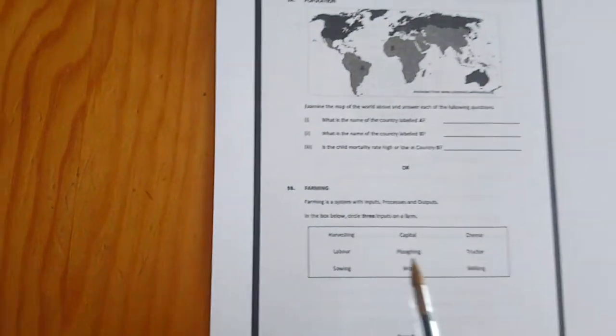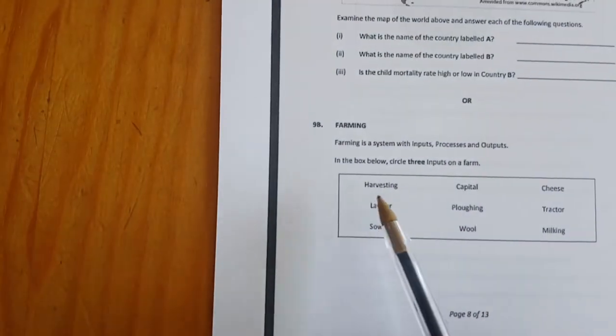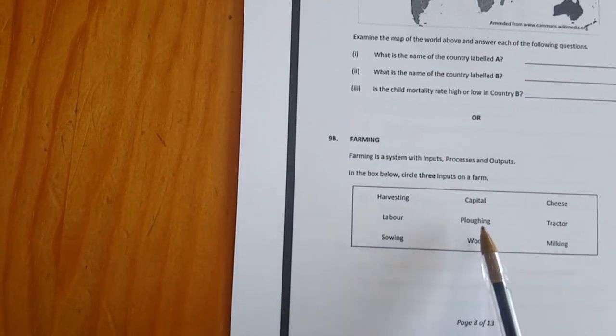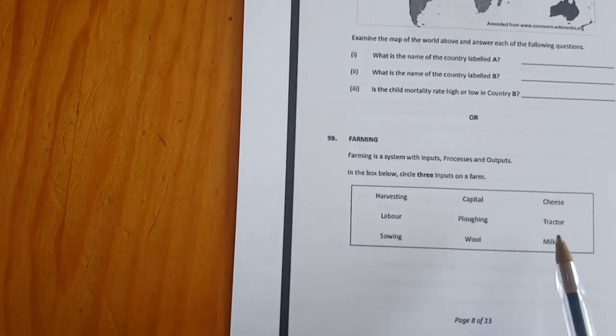So we have harvesting, capital, cheese, labour, ploughing, tractor, sowing, wool, milking.